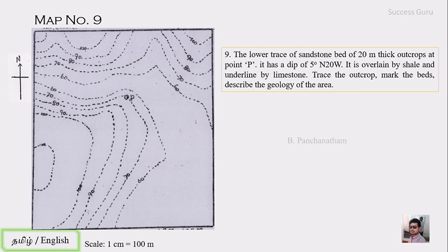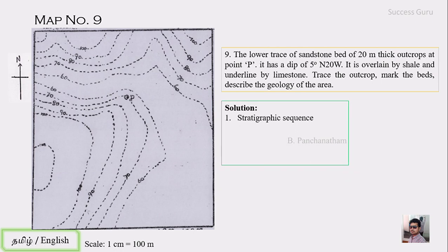Here is the map showing point P, which indicates the lower trace of sandstone, along with the direction and scale. The very first step in solving the map is writing down the stratigraphic sequence. So far we have dealt with only one formation, but here we are getting three formations: sandstone, shale, and limestone.